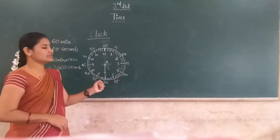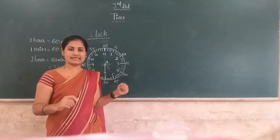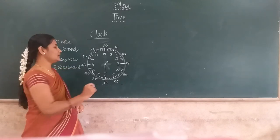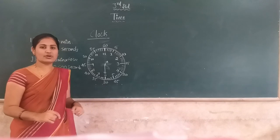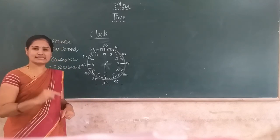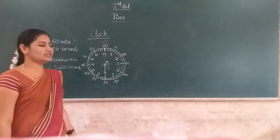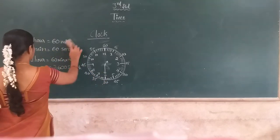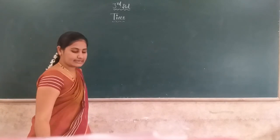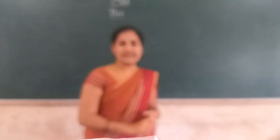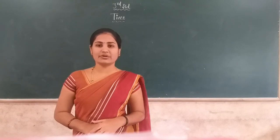Now you know the minutes, so you can easily identify and read the time by seeing the clock. You must remember: 1 on the clock represents 5 minutes, 2 represents 10 minutes, 3 represents 15 minutes, and so on. This is the information about time. In the next class we will do some exercises on time from your textbook. Let's continue in the next video class. Thank you.